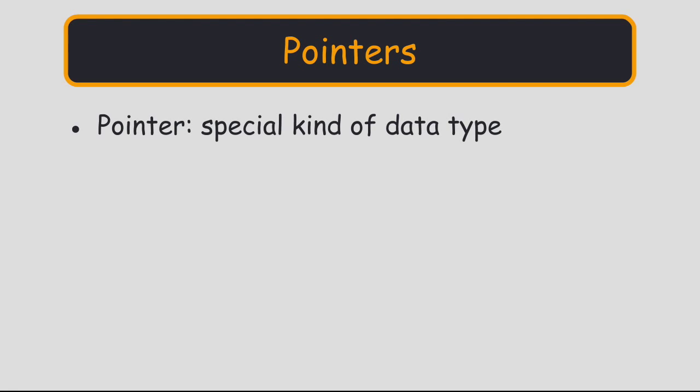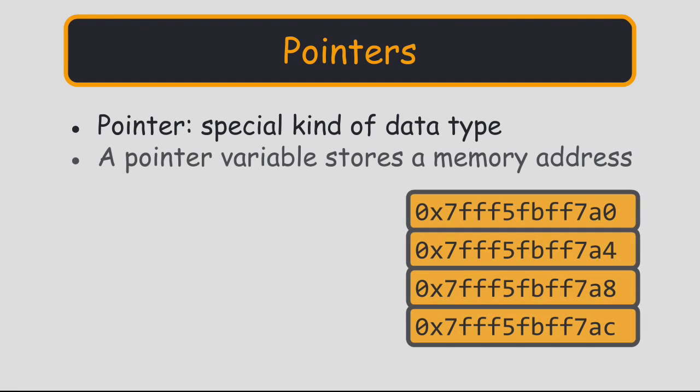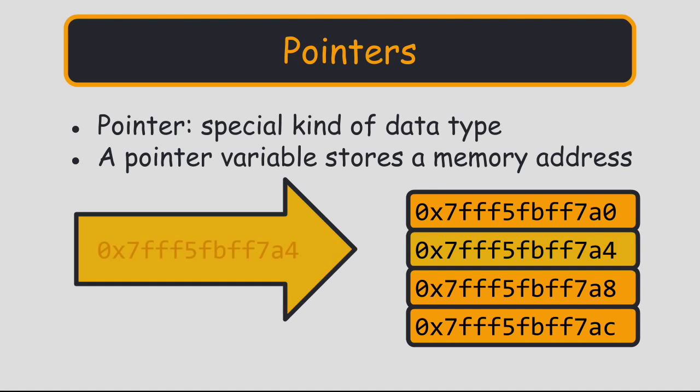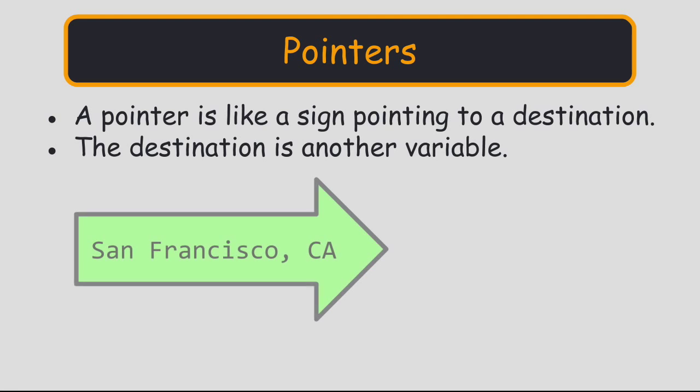A pointer is a special kind of data type. Unlike primitive data types, which store things like ASCII characters, integers, and floating point numbers, a pointer stores a memory address. We call them pointers because they act like road signs that point to a destination.